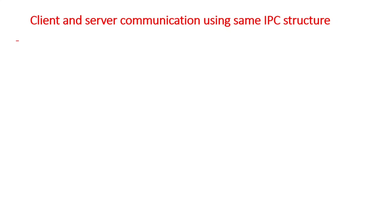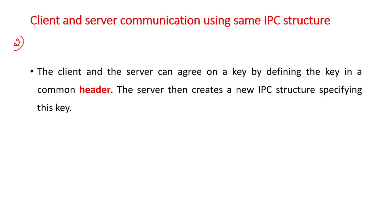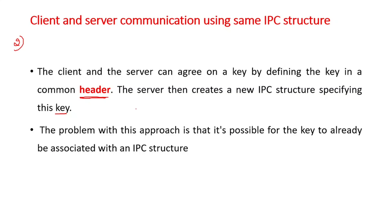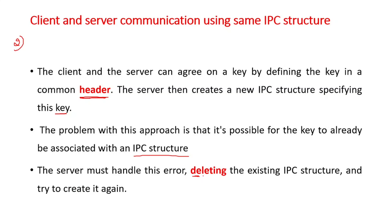Now let us see the second approach for client-server communication using the same IPC structure. The client and server can agree on a key by defining it in a common header file. The server then creates a new IPC structure using this agreed-upon key. However, the problem is that the key may already be associated with an existing IPC structure. In that case, the server must handle the error by deleting the existing IPC structure and trying to create it again.